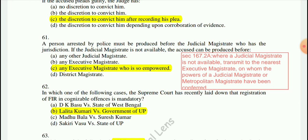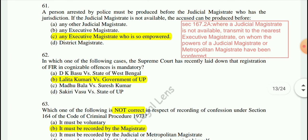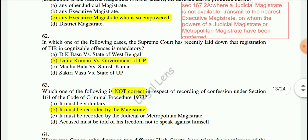Question 61: Any person arrested by the police must be produced before the judicial magistrate who has jurisdiction. If the judicial magistrate is not available, the accused can be produced before any executive magistrate who is empowered — this is written in Section 167, clause 2(a), which states that where a judicial magistrate is not available, transmission shall be to the nearest executive magistrate.